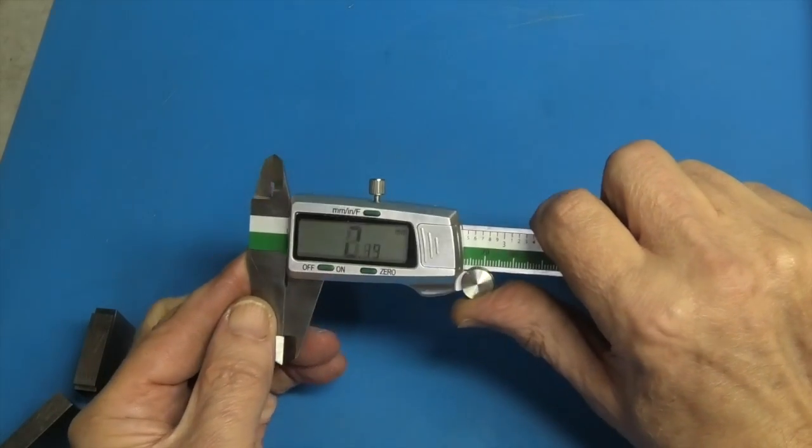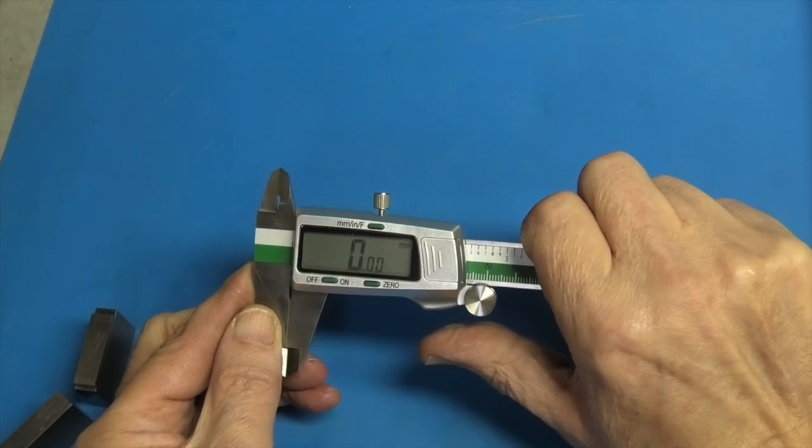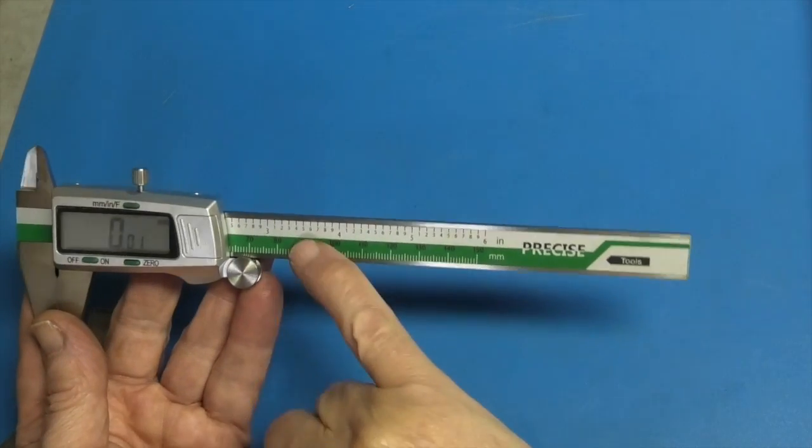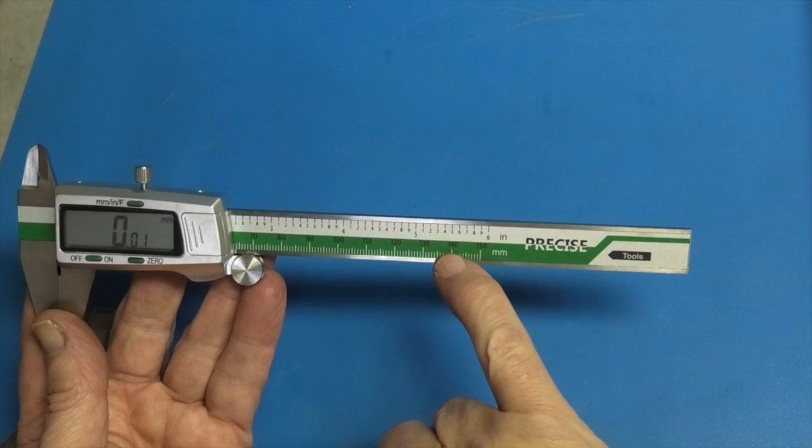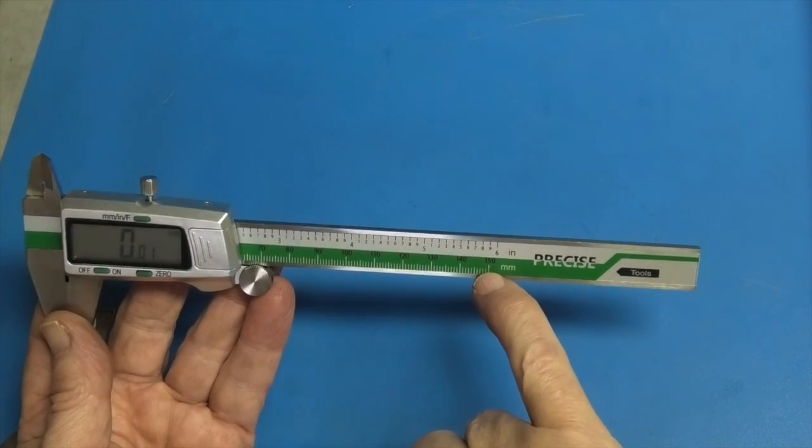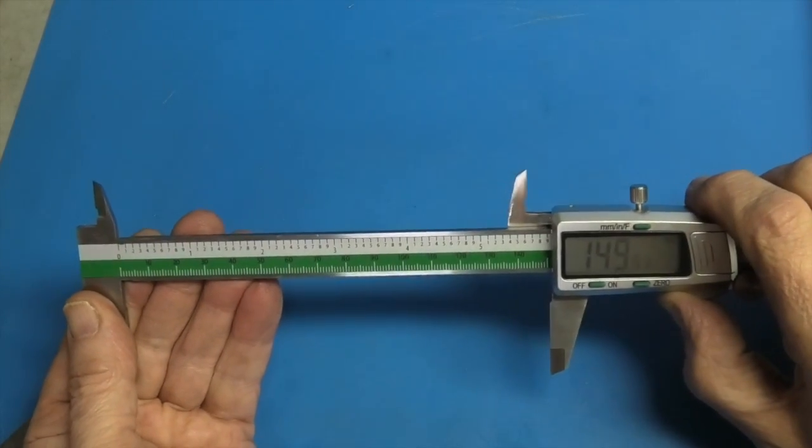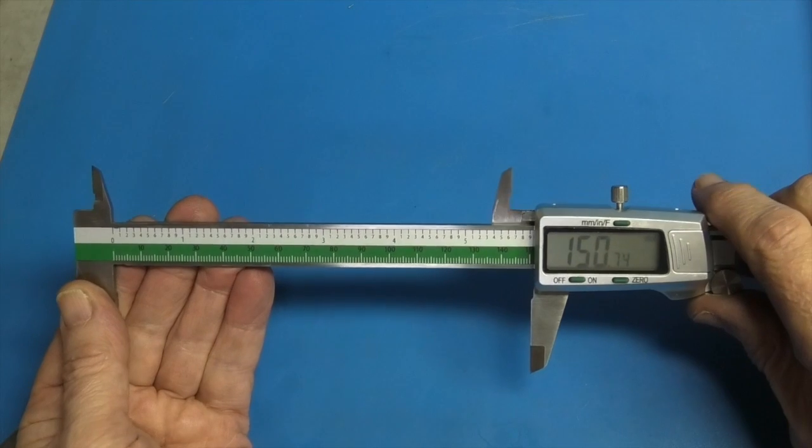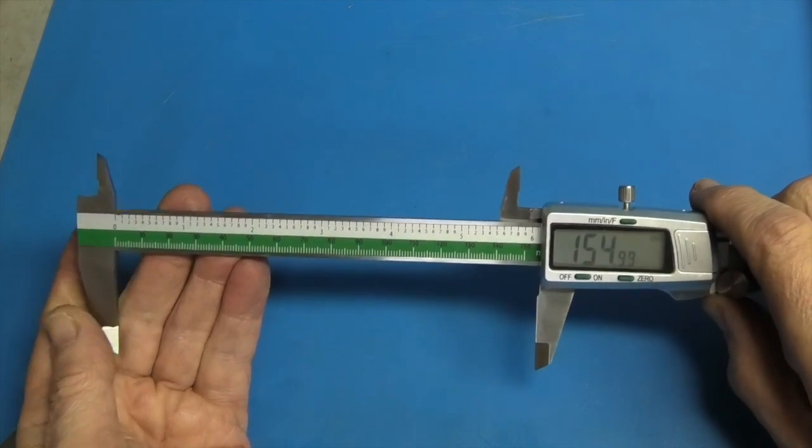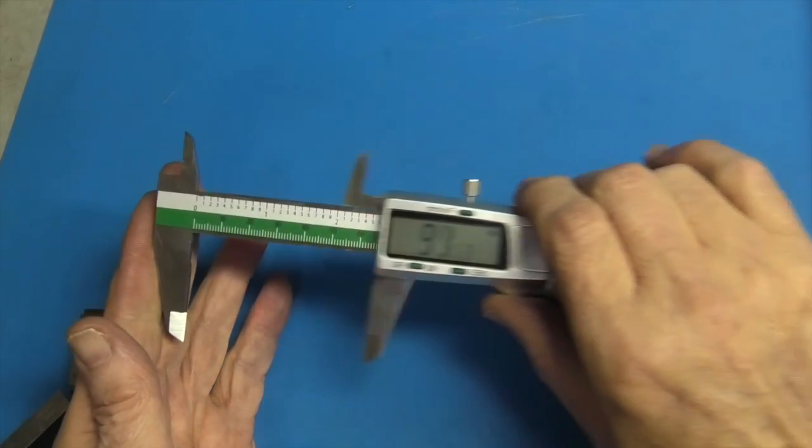Standard caliper. Digital caliper. On the scale. It does have a ruler scale here. So it goes up to six inch. 150. Actually it goes up to 155 on this one. And we'll try this on the lathe as well.